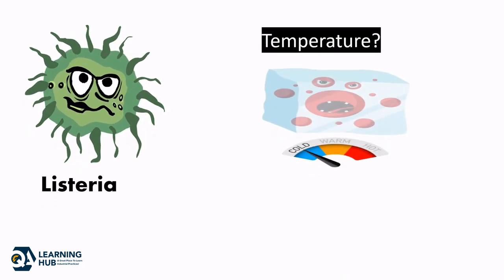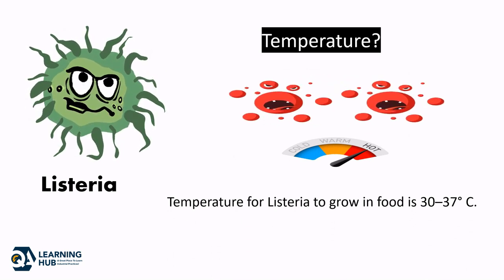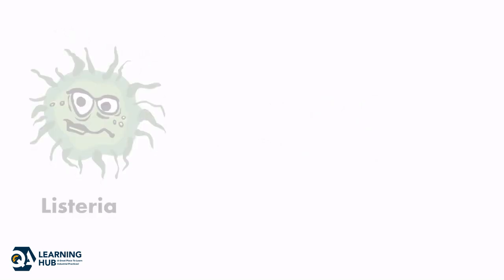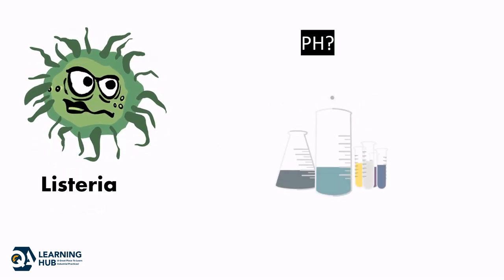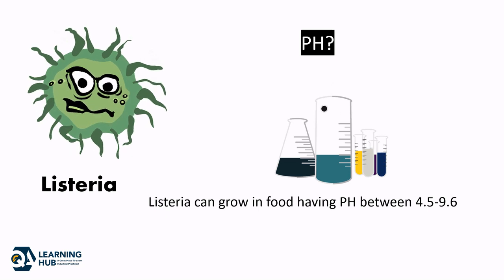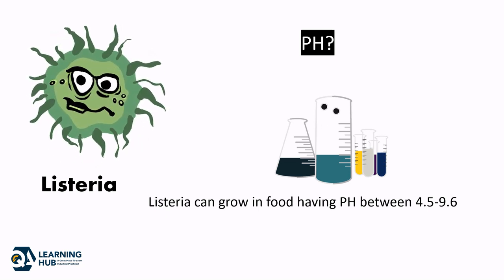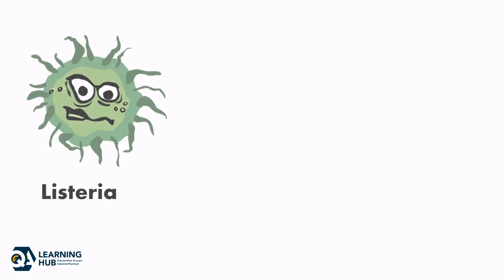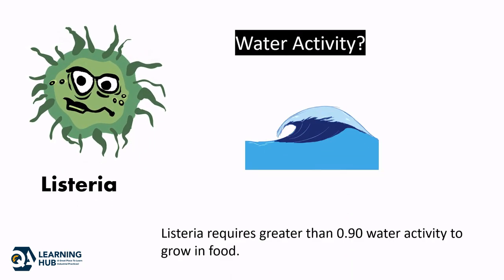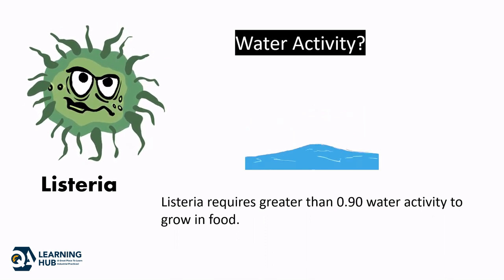Temperature: The temperature for Listeria to grow in food is 30 to 37 degrees centigrade. pH: Listeria can grow in food having a pH between 4.5 to 9.6. Water activity: Listeria requires greater than 0.90 water activity to grow in food.